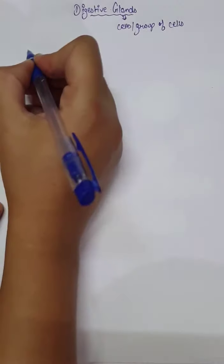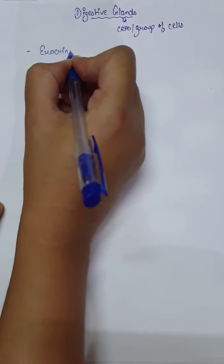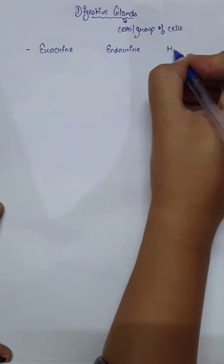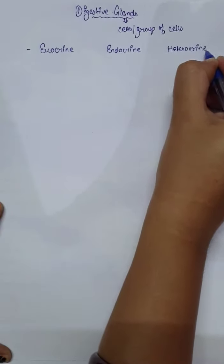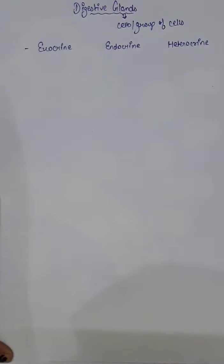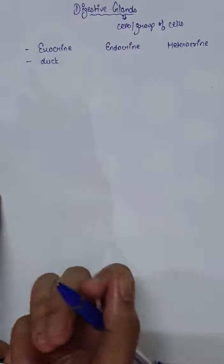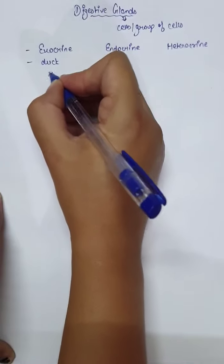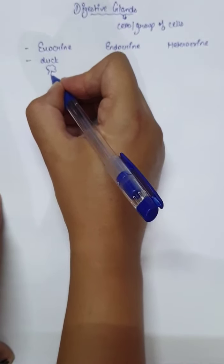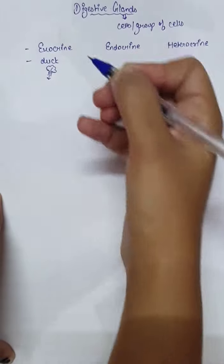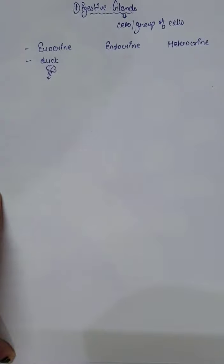If you talk about types of glands, basically three types are present: Exocrine, Endocrine, and Heterocrine. Exocrine glands are those which contain a duct. A duct is simply a passage through which the gland releases its secretion. Such glands are known as Exocrine glands.